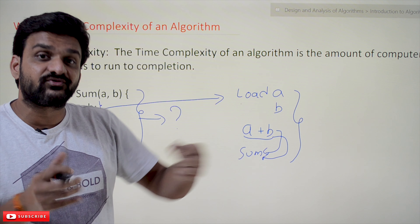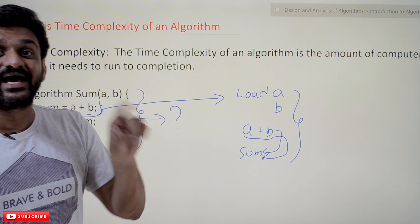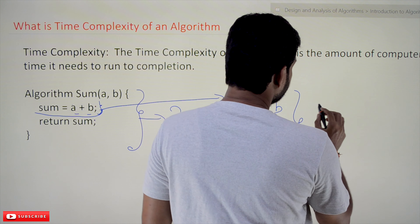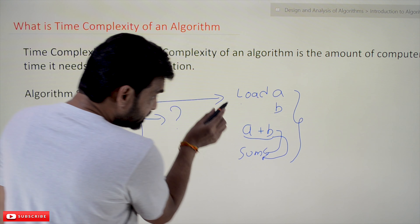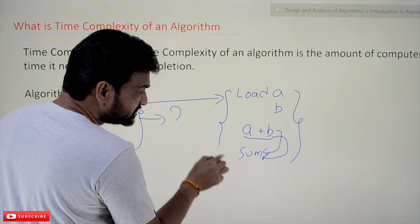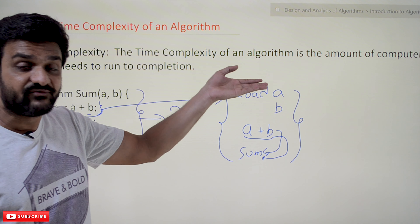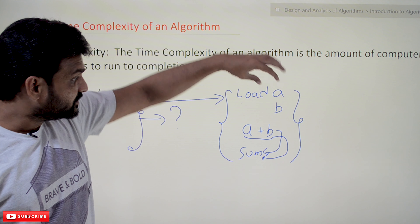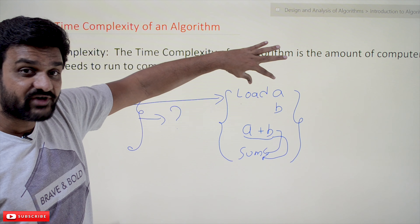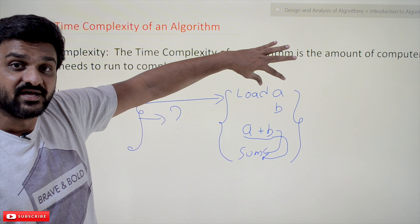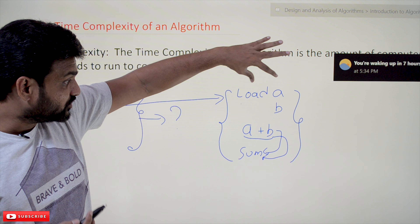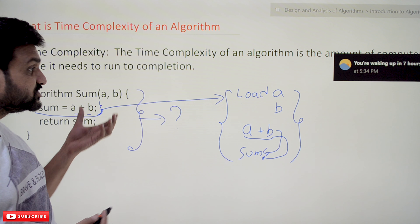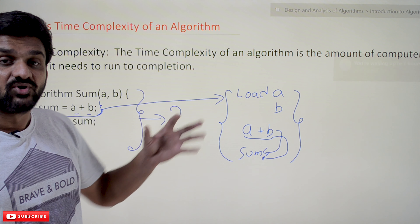All these factors are what we call instance characteristics. These factors also depend upon the way in which the compiler has been designed. Based on the way the compiler is designed, the program execution time varies. So all these factors together are what we refer to as instance characteristics.